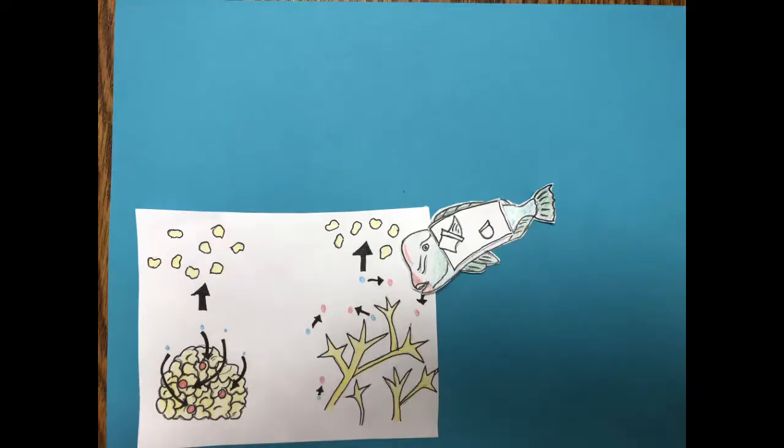In order to increase the genetic diversity of reefs, corals must go through sexual reproduction to create coral planulae, which then settle on the benthos.